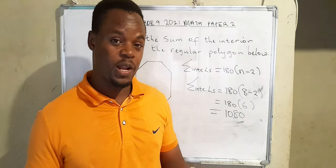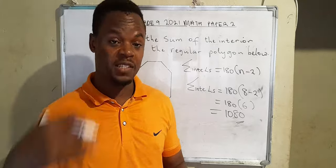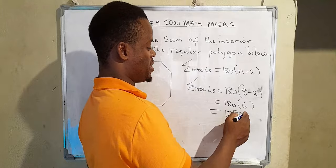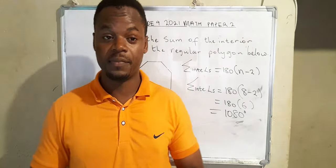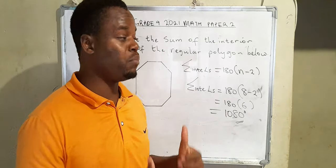Now, since what we were looking for is the sum of the interior angles, we need to realize that angles are measured in degrees. So the sum of the interior angles of that eight-sided polygon is 1080 degrees.